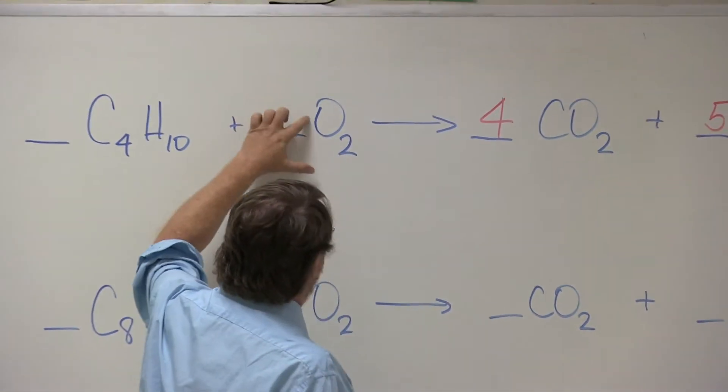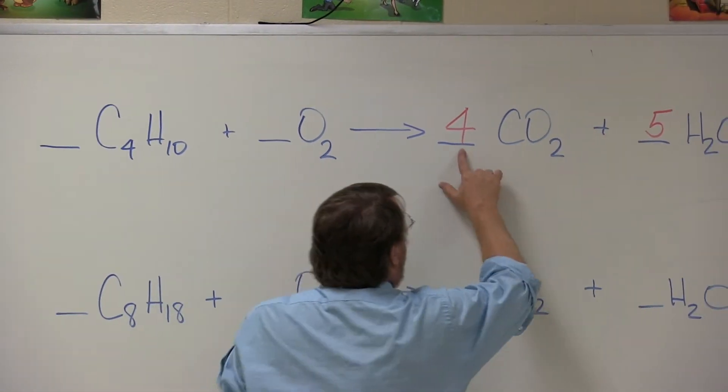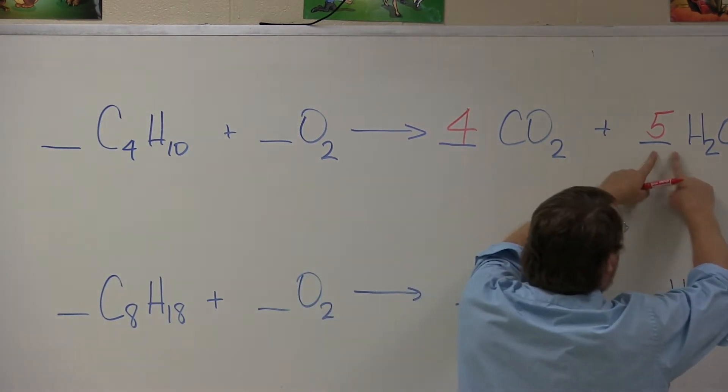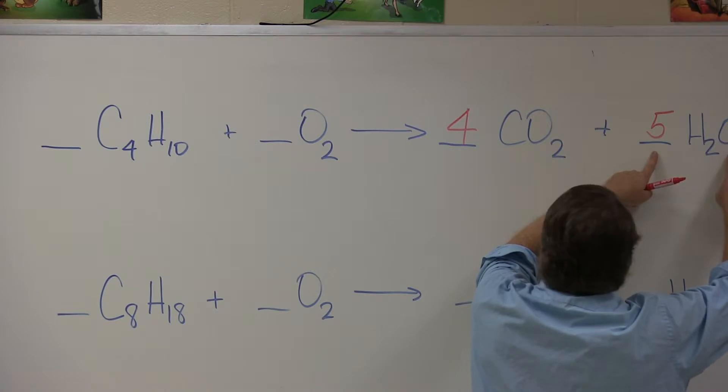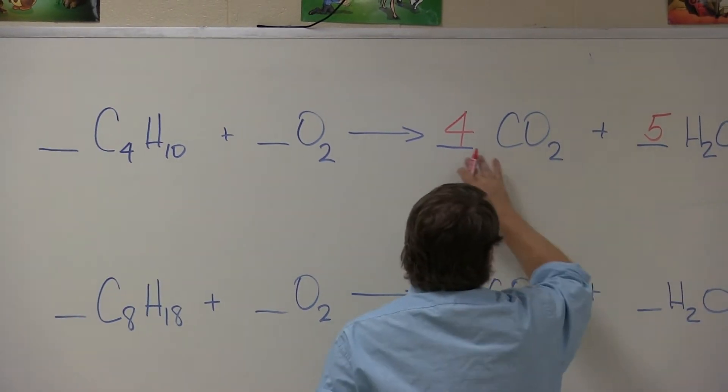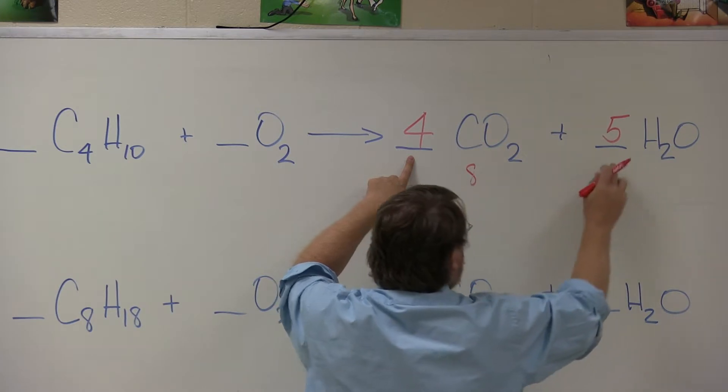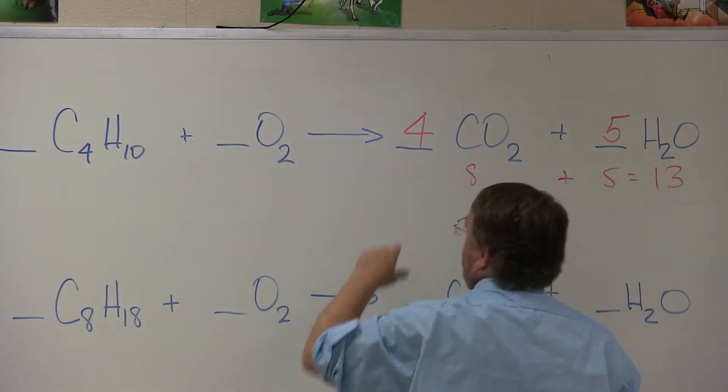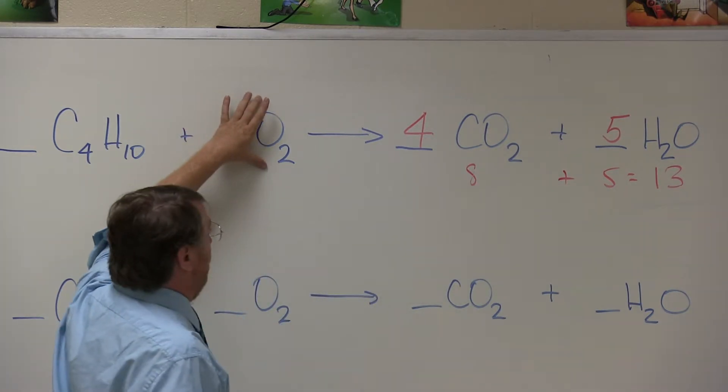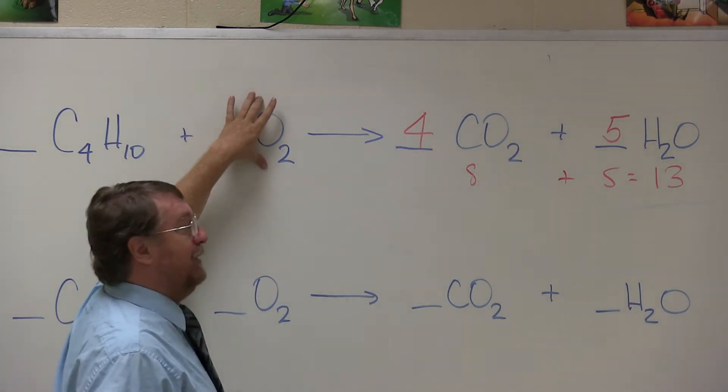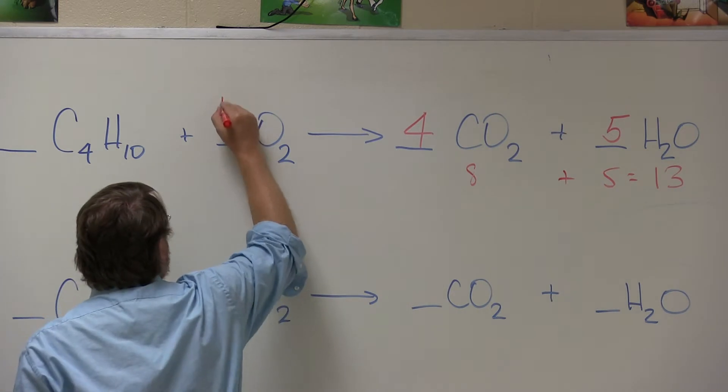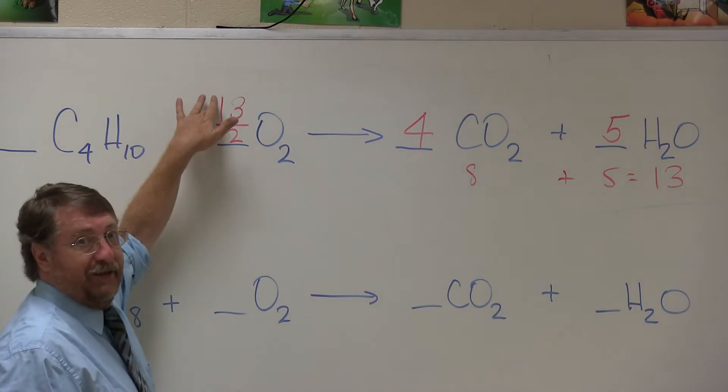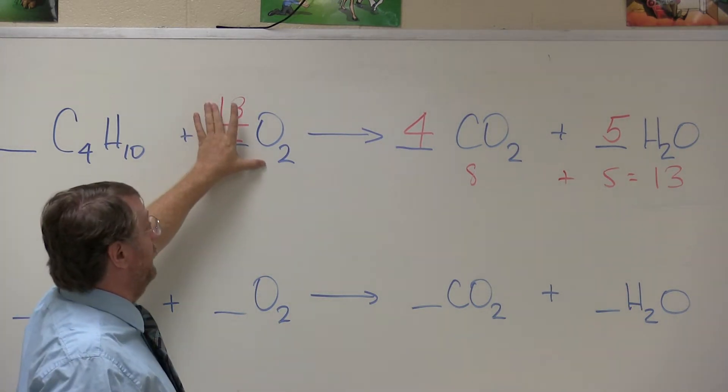Now I'm going to go to oxygen. Here I have two oxygens. Here I have eight oxygens in four carbon dioxide molecules and five oxygens in water. And four times two is eight. Five times one is five. That's going to give me 13 oxygens. Here I have two oxygens. How am I going to make that 13? I'm going to use a fraction, 13 over two, because 13 halves, which is 6 1⁄2, doubled is 13.